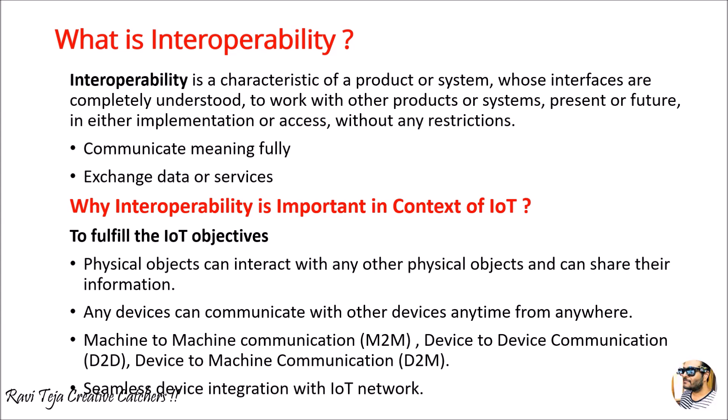Any device can communicate with other devices anytime from anywhere — obviously if it is connected to the internet. Machine-to-machine communication, device-to-device communication, and device-to-machine communication all fall under these IoT objectives. We also need seamless device integration with the IoT network using a simple internet connection, along with complex device integrations to satisfy particular applications. In order to fulfill all these objectives, interoperability is one of the important contexts considered in IoT.